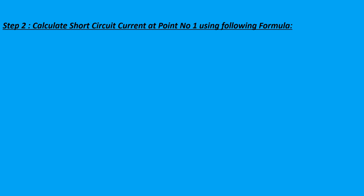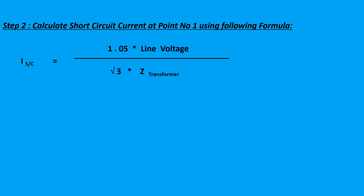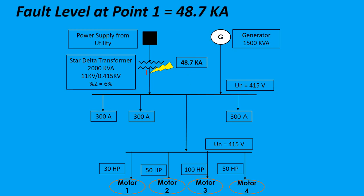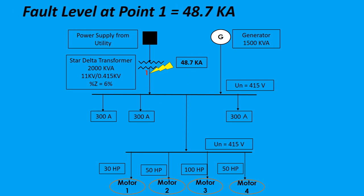Step 2: Calculate short circuit current at Point No.1 using the following formula. Short circuit current ISC at Point No.1 is equal to 1.05 times line voltage divided by √3 and Z transformer. Therefore ISC is equal to 1.05 × 0.415 divided by √3 and 0.005166. So ISC is equal to 48.7 kA. Fault level at Point No.1 is equal to 48.7 kA.